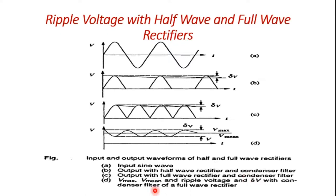Delta-V is large for half-wave and less for the full-wave rectifier. Delta-V depends on parameters like input frequency, the time constant (capacitance and R-L value), and the reactance of the transformer X-L. For half-wave rectifier, the ripple frequency equals the supply frequency; for full-wave rectifier it is twice that value. There must be a proper choice of filter capacitor and transformer reactance for the given load R-L value; otherwise there is an increase in delta-V resulting in excessive ripple in the output.